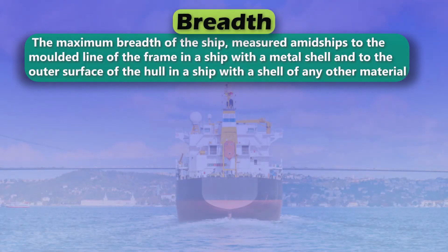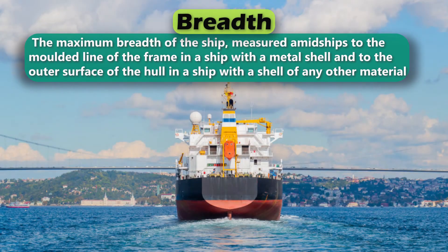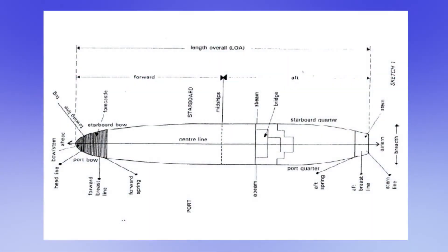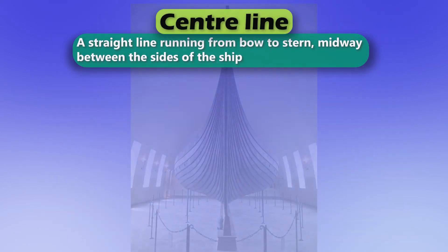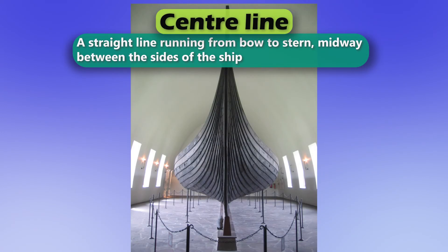Breadth: the maximum breadth of the ship, measured amidships to the molded line of the frame in a ship with a metal shell, and to the outer surface of the hull in a ship with a shell of any other material. Centerline: a straight line running from bow to stern, midway between the sides of the ship.